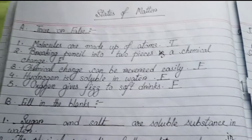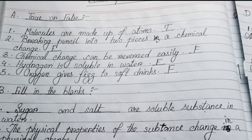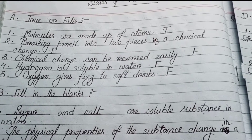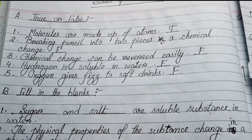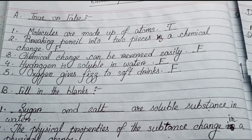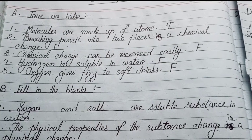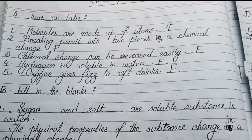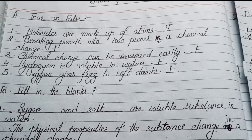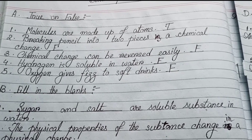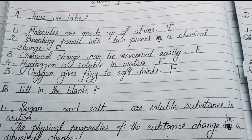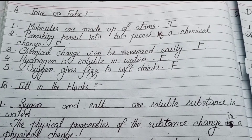States of Matter. First, we have some objective type question answers. Part A — True or False. Number 1: Molecules are made up of atoms — True. Number 2: Breaking a pencil into two pieces is a chemical change — False. Number 3: Chemical change can be reversed easily — False.